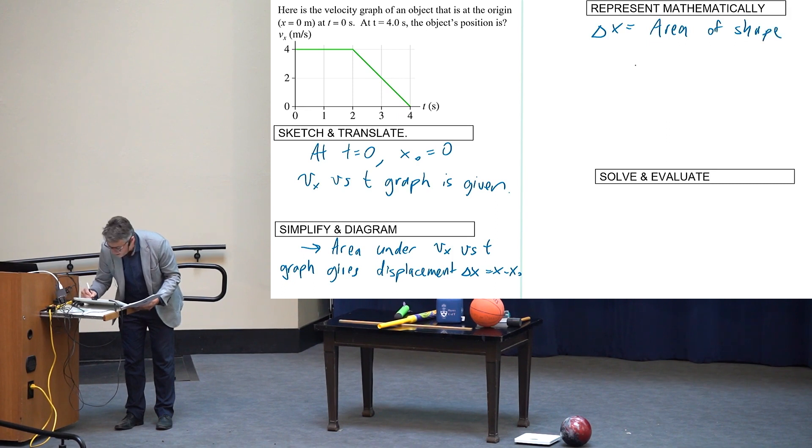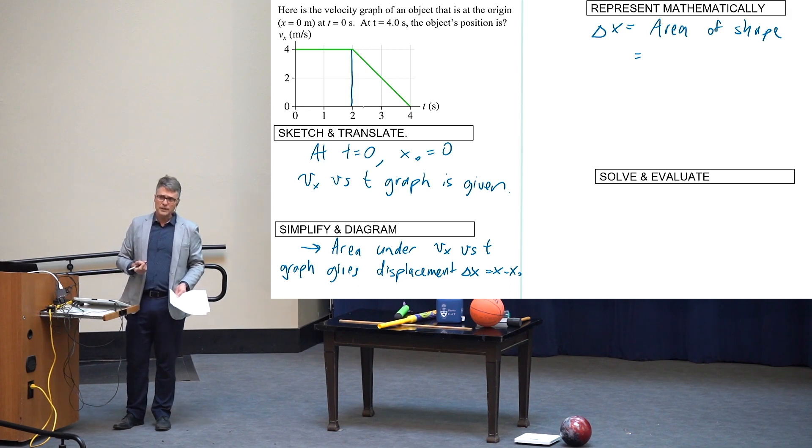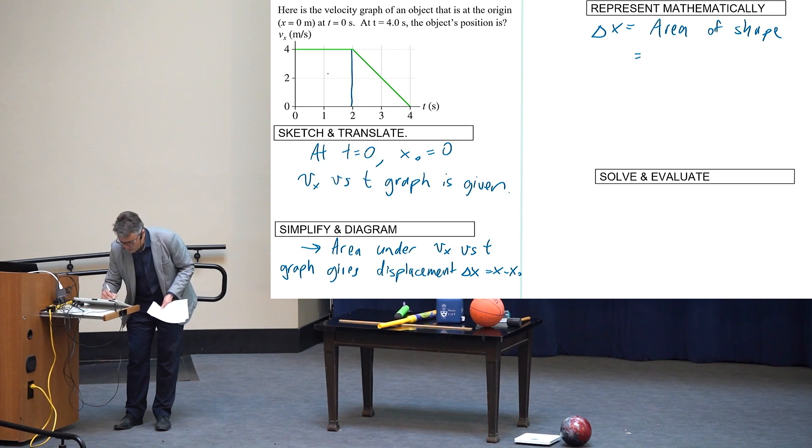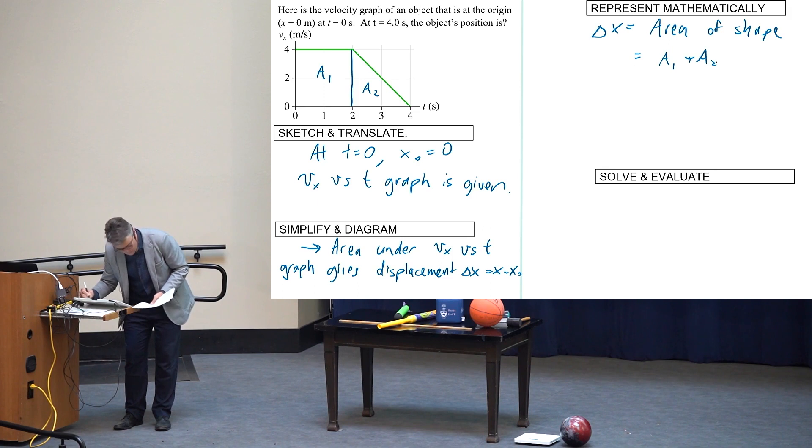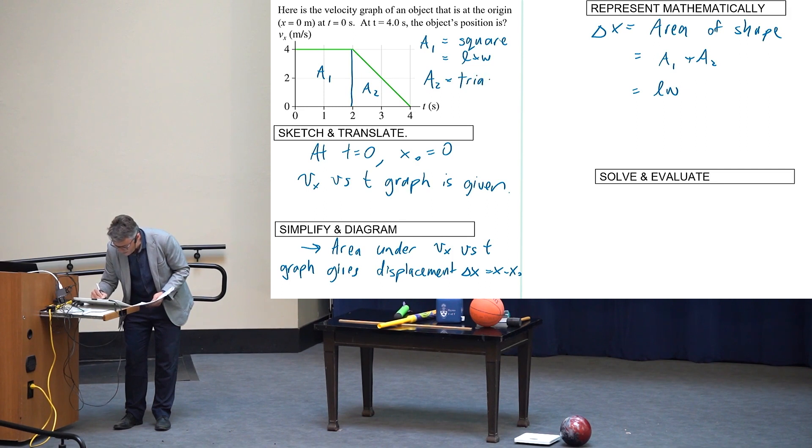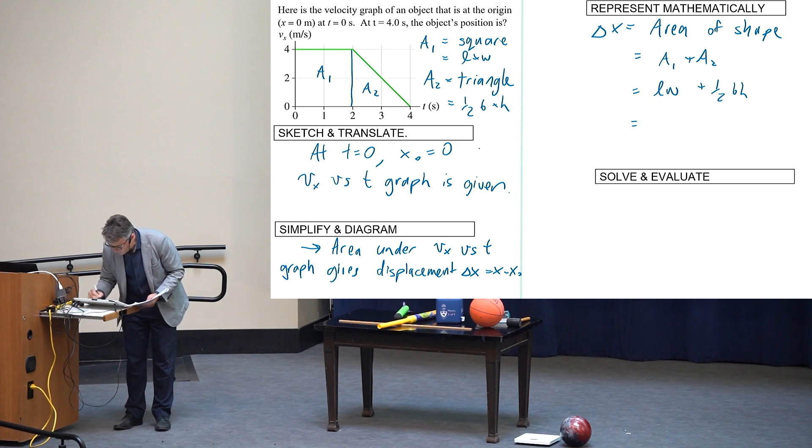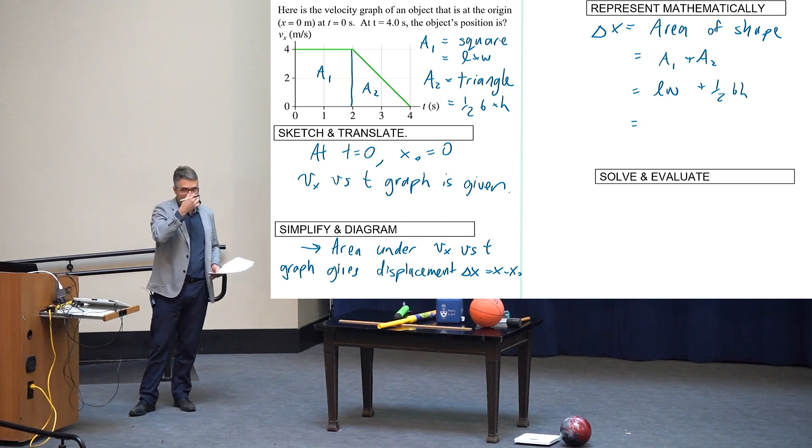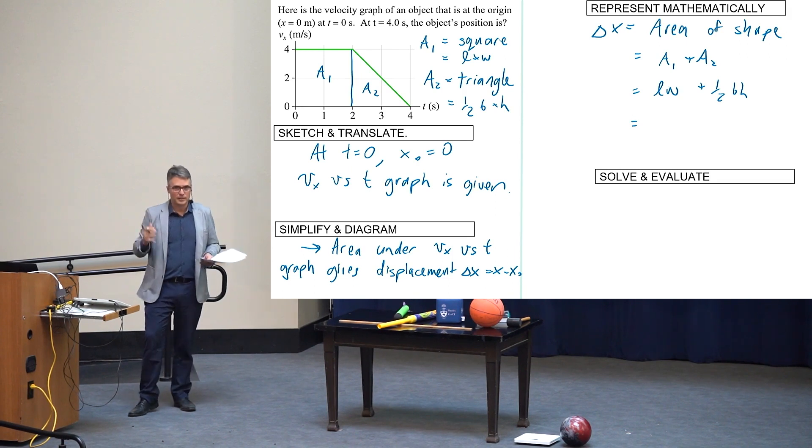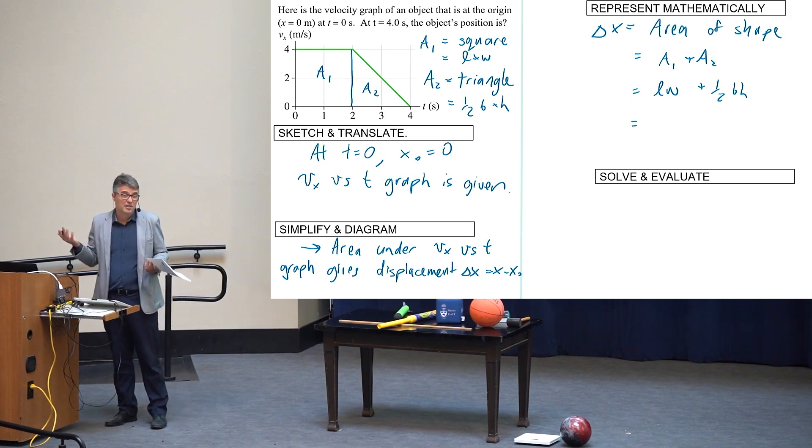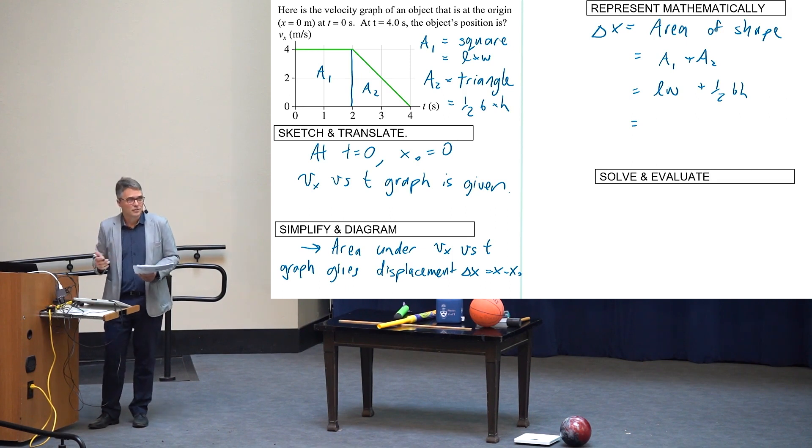The idea here is that the area under the vx versus t graph gives the displacement, delta x, which is the x final minus the x initial. So delta x equals the area of the shape. The way I'm going to do it is make it a square and a triangle because I know how to find the area of a square and triangle. I'll just add them.